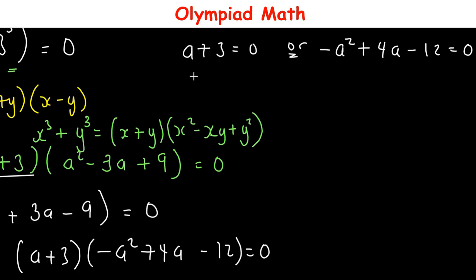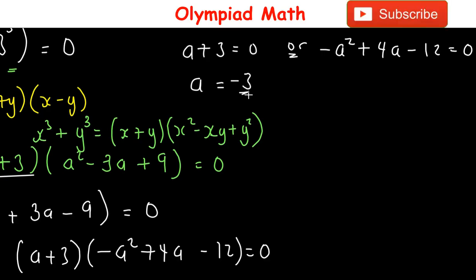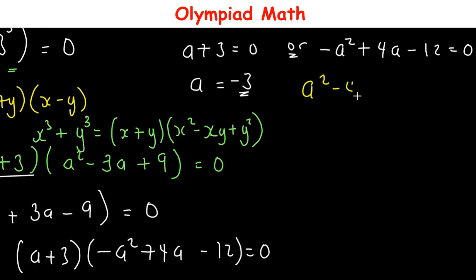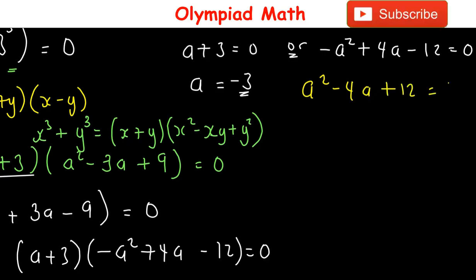Setting each factor to zero: a + 3 = 0 gives a = -3. For the other factor, multiplying by -1 gives a² - 4a + 12 = 0.